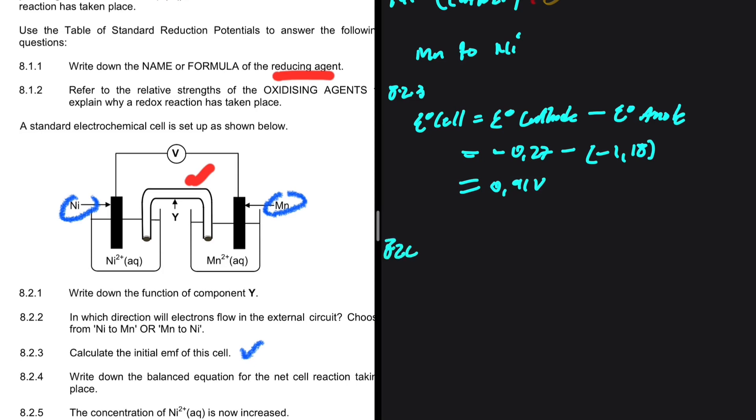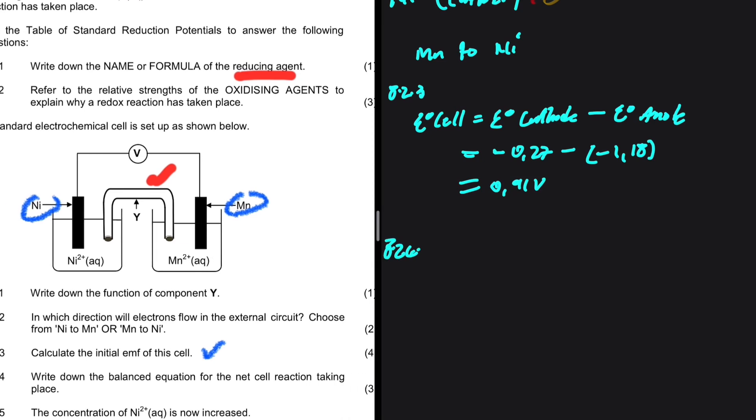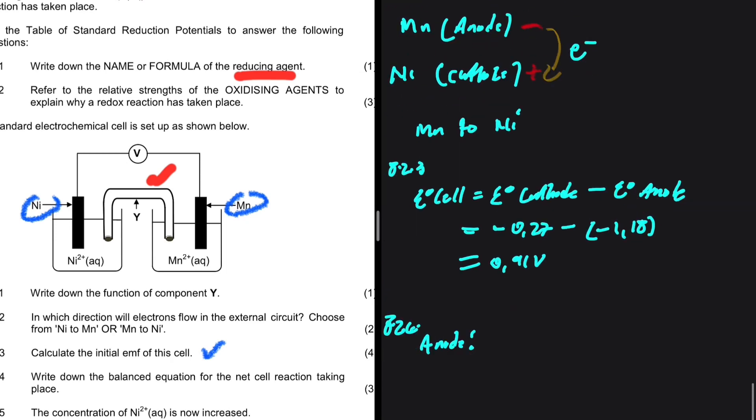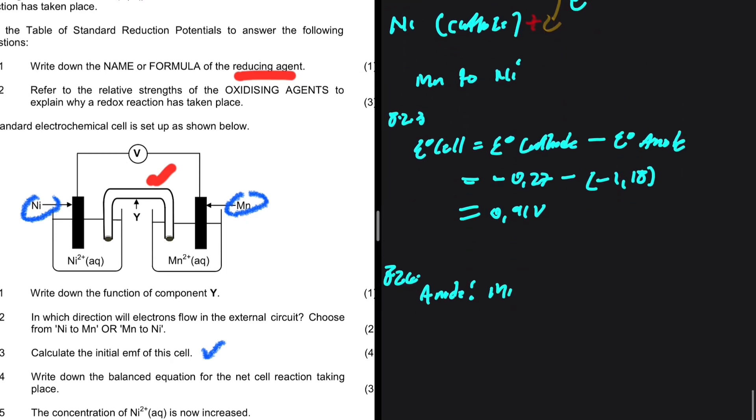8.2.4. Write down the balanced equation for the net reaction taking place. Let's start with the anode where oxidation takes place. At the anode, we have Mn losing 2 electrons to form Mn2+ plus 2 electrons. And then at the cathode, we have Ni2+ plus 2 electrons to give us Ni. It is easy to see that in equation 1, we have a loss of electrons, and in equation 2, we have a gaining of electrons.